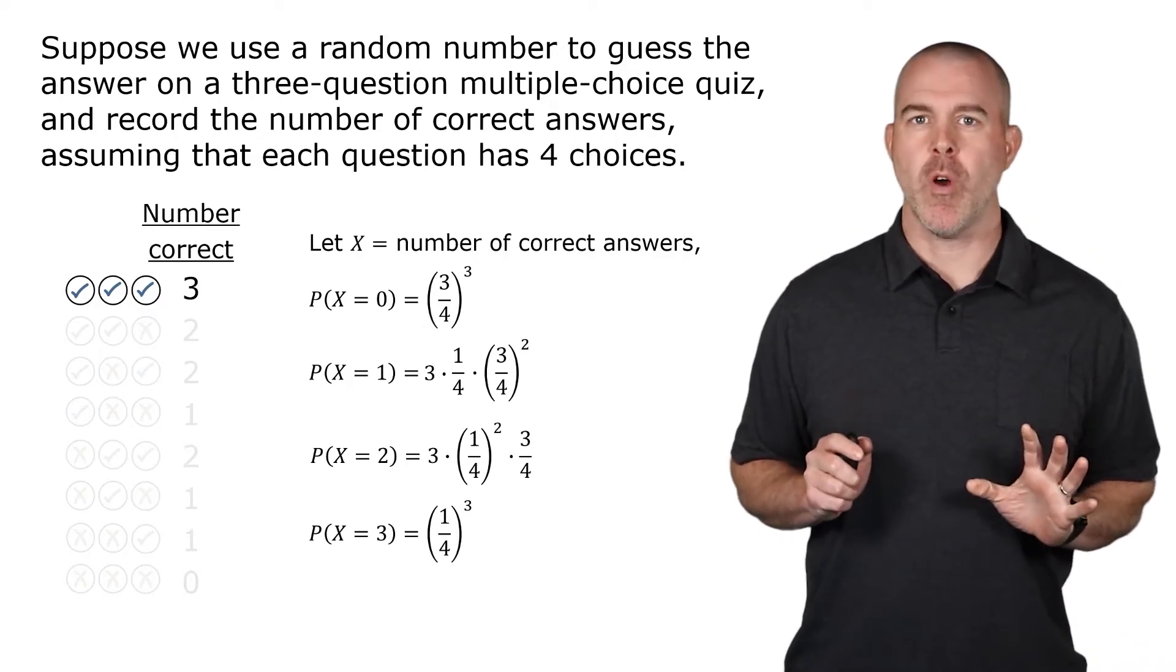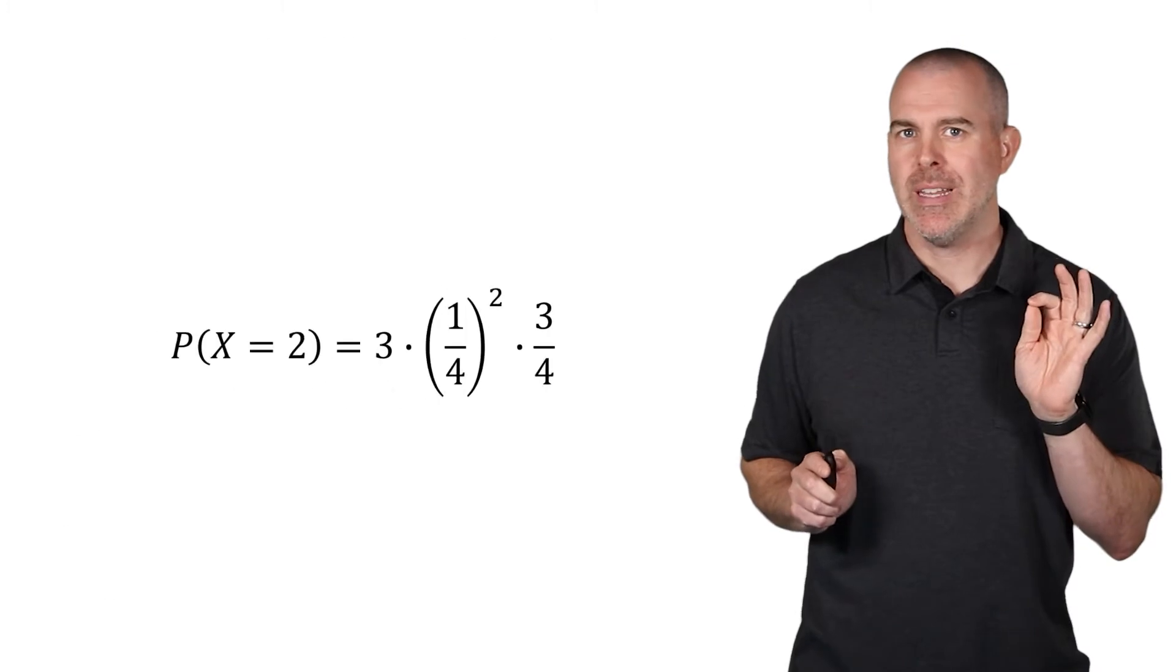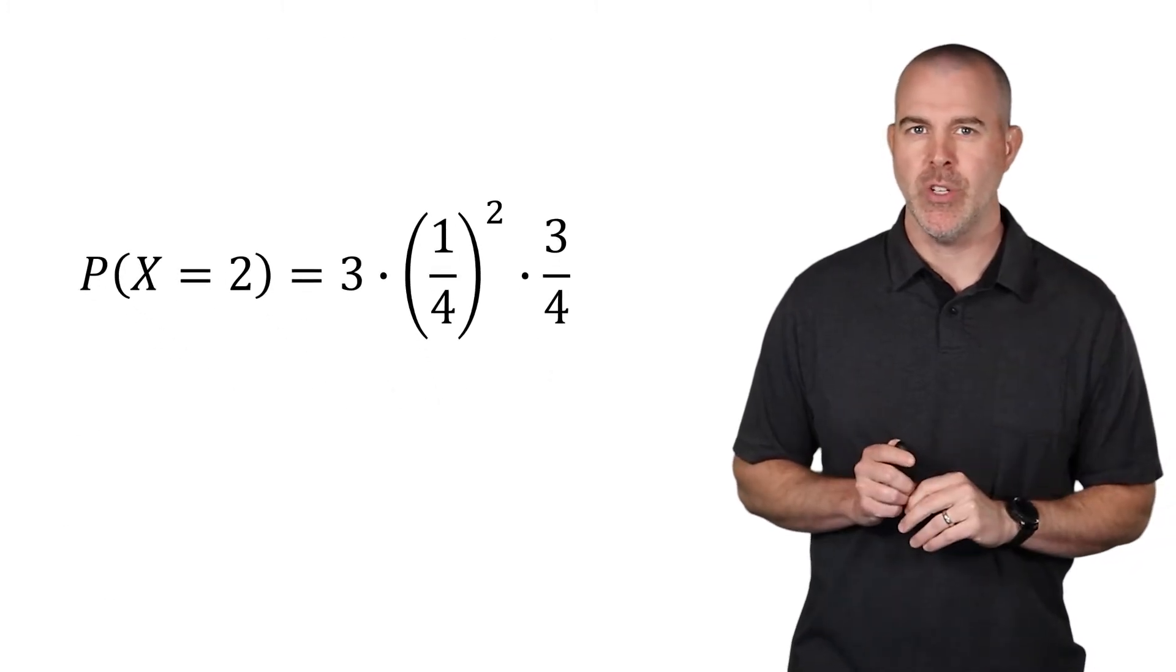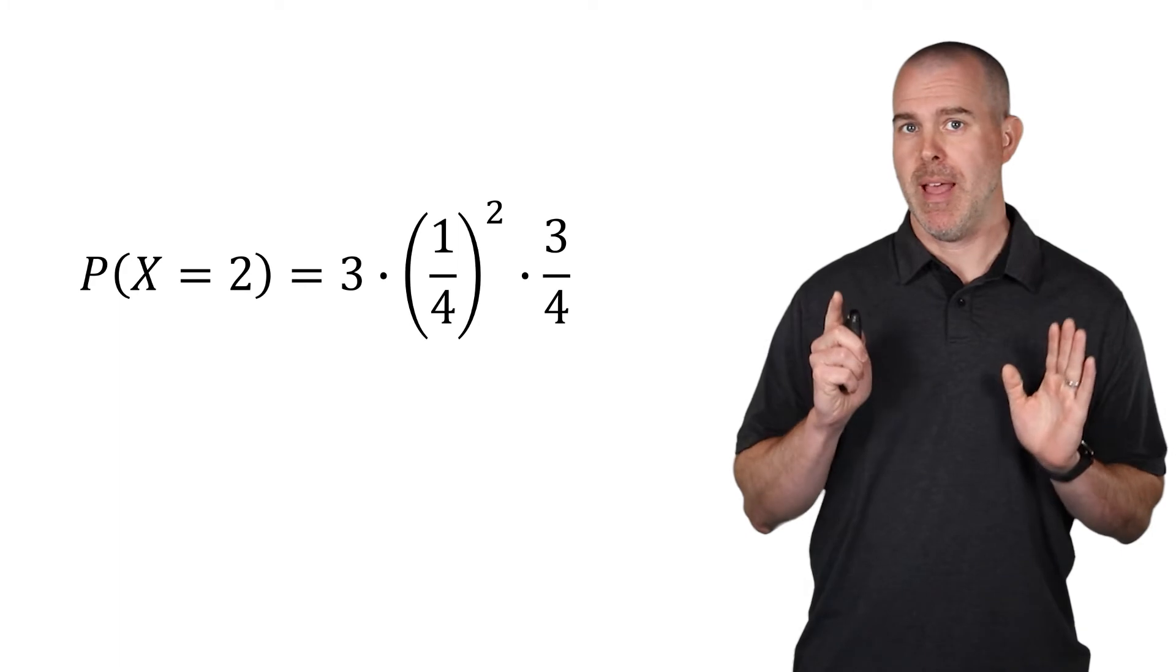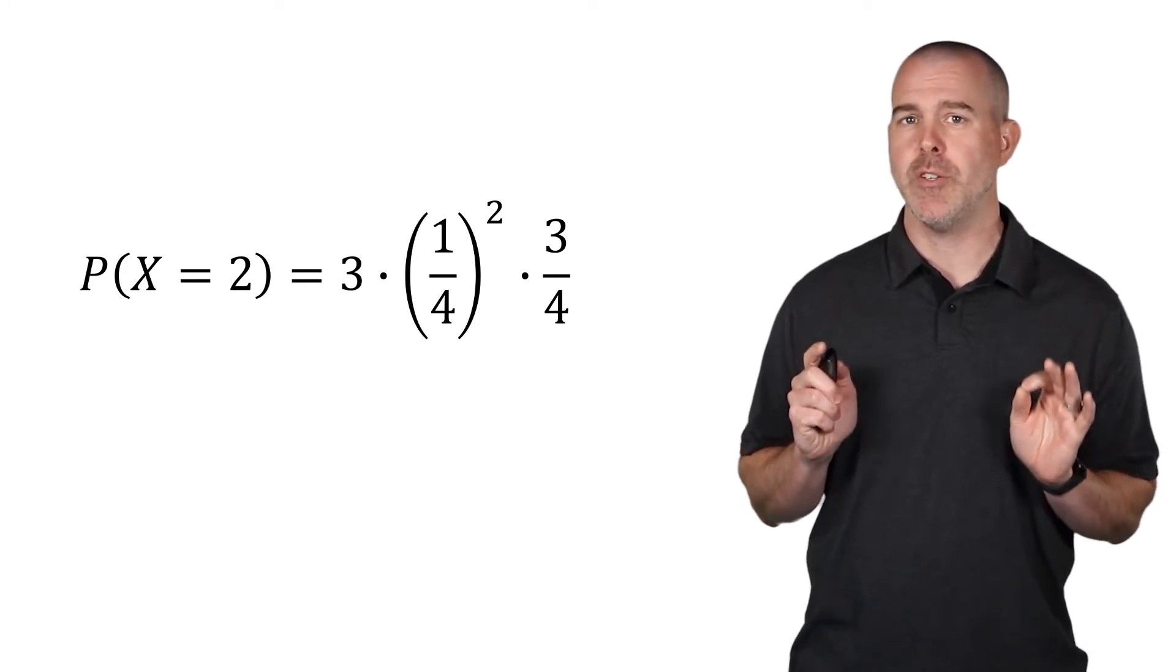We're going to try to get a general formula. And the way we're going to do this is we're going to focus on this two, the probability that X is two. And there are three parts to this. And let's discuss carefully each part.